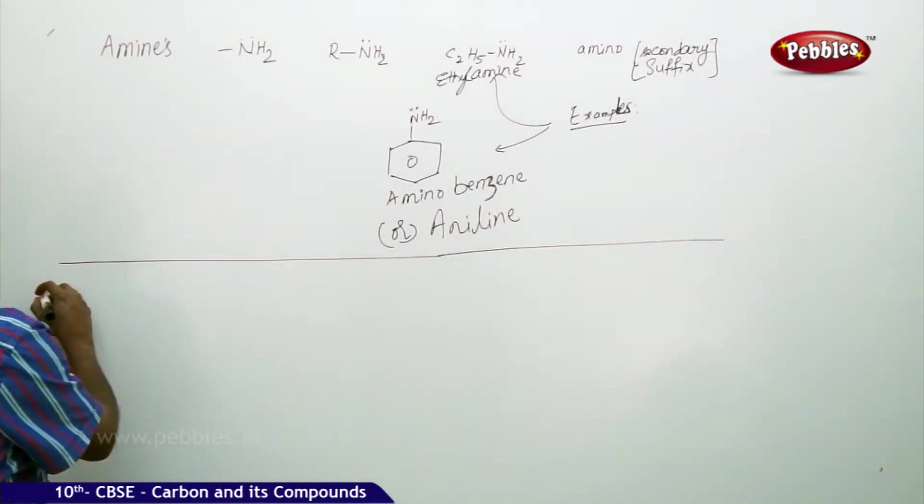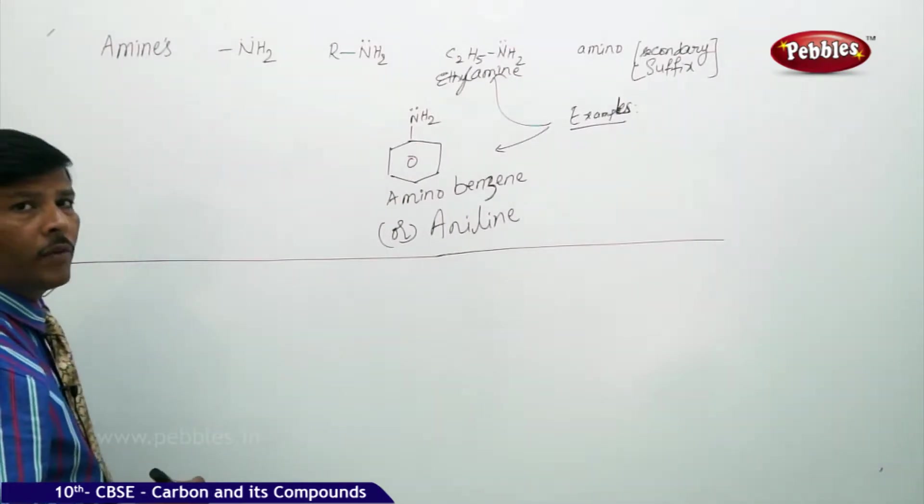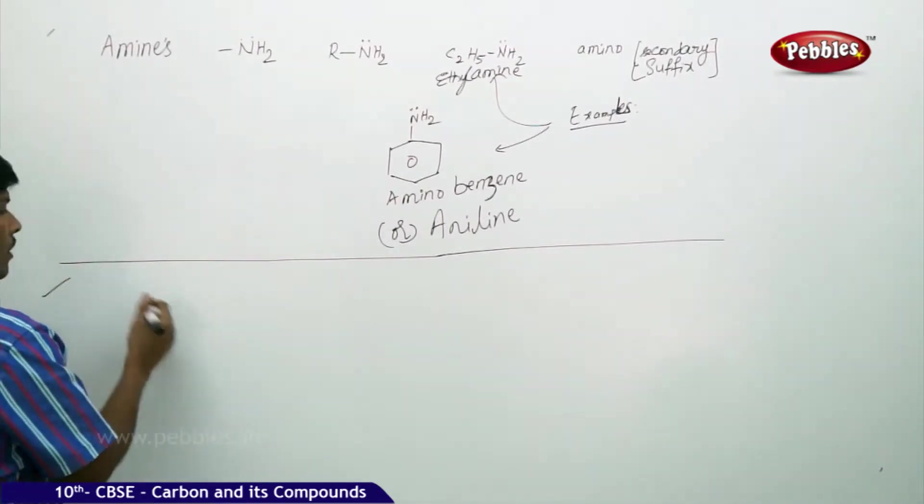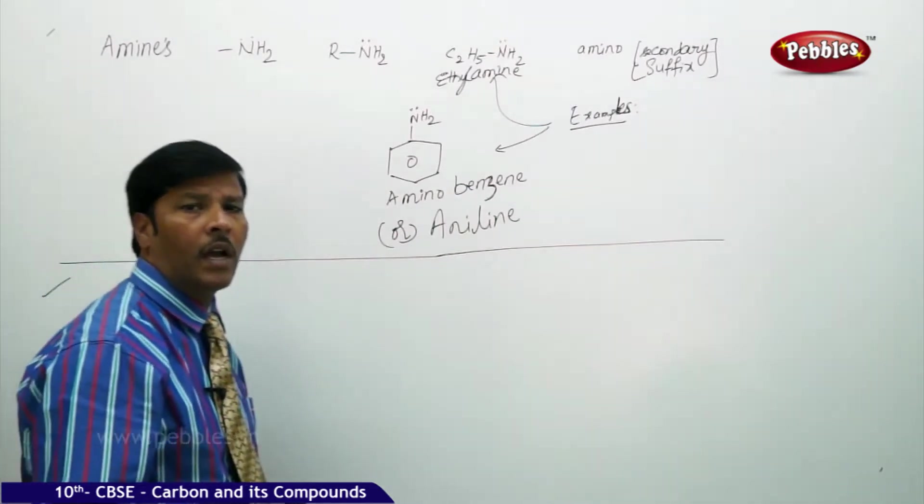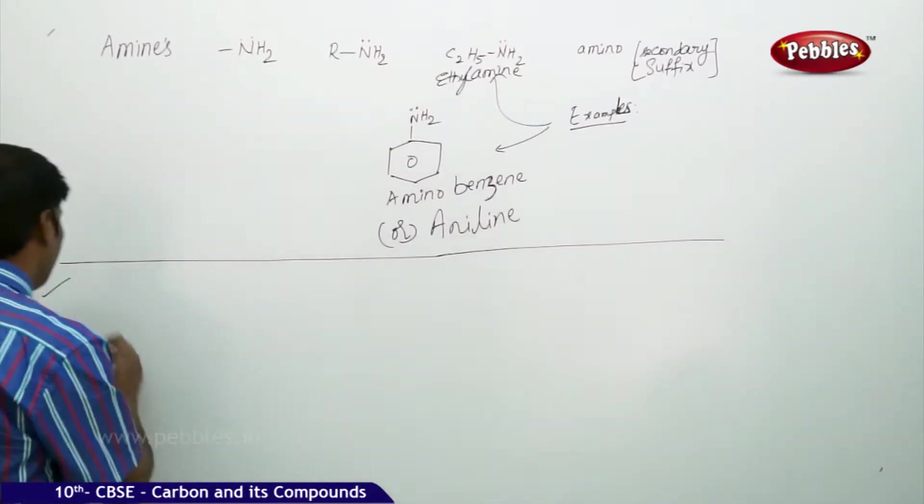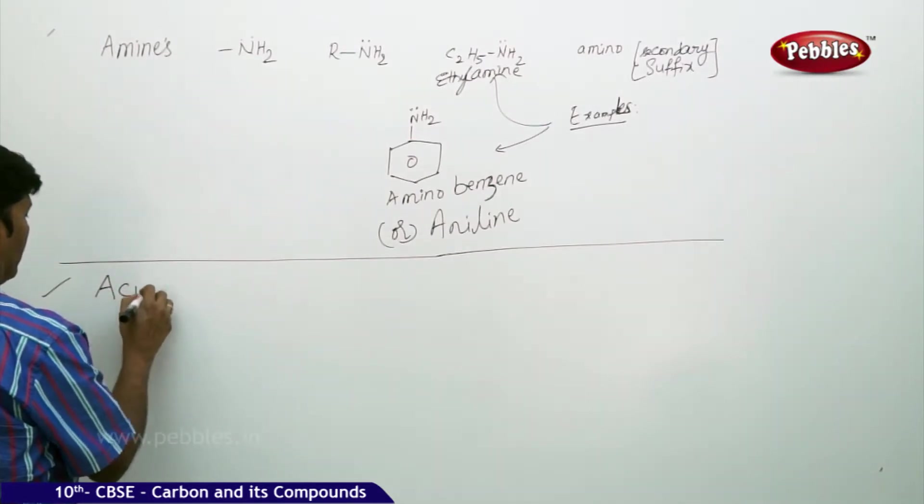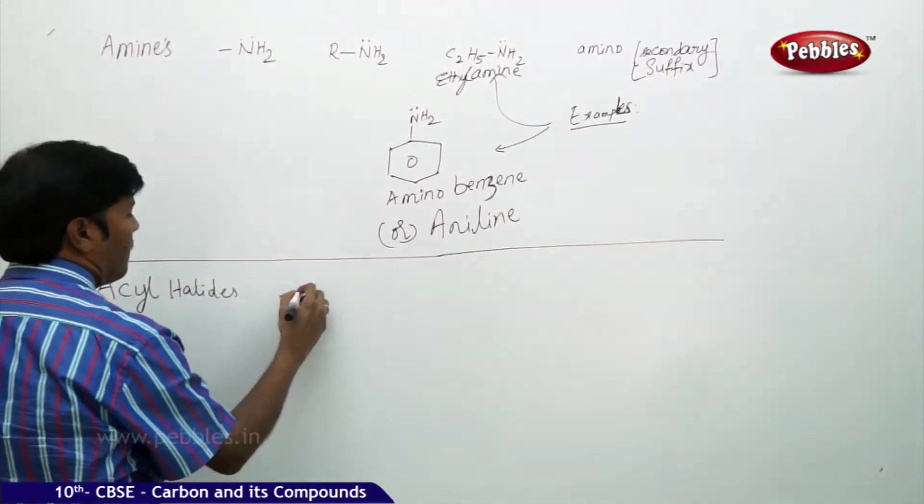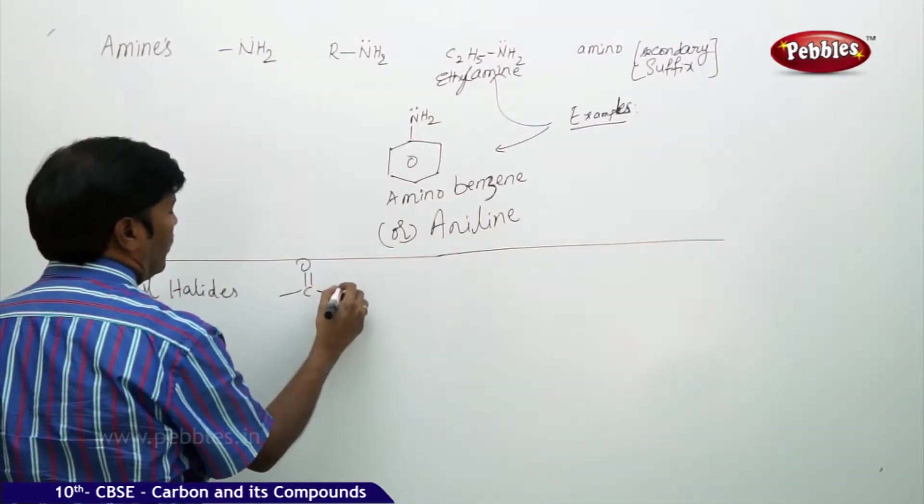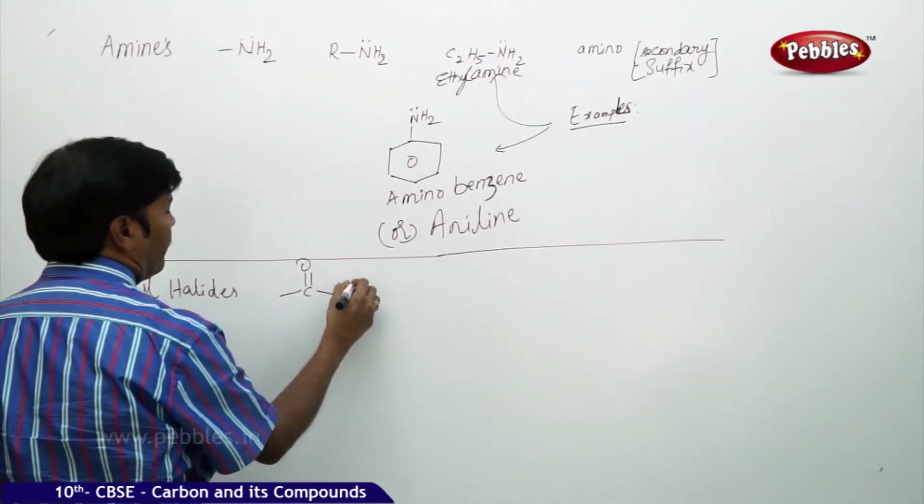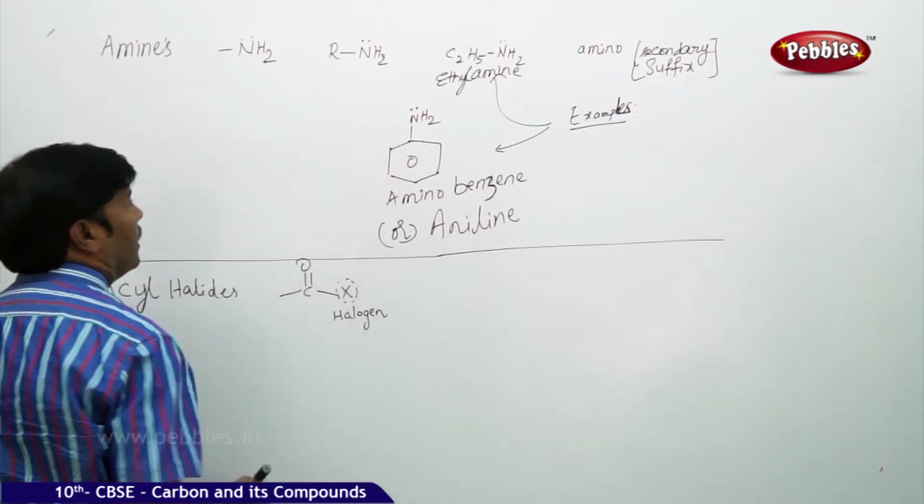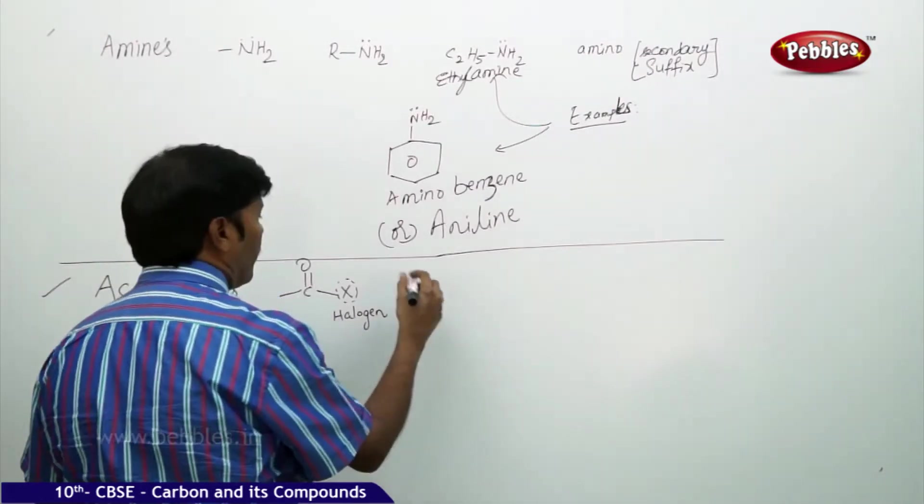Then you can take the next part, the next class of organic compound. That is acyl halides. Functional group: C=O-X, where X is the halogen. General formula: R-C=O-X.